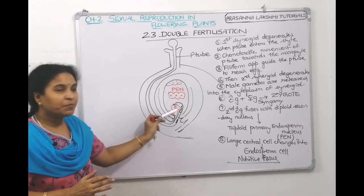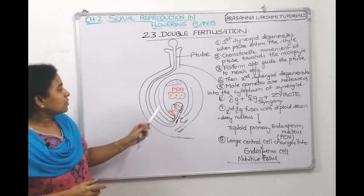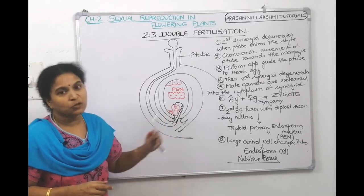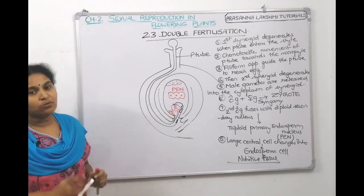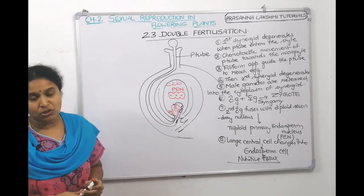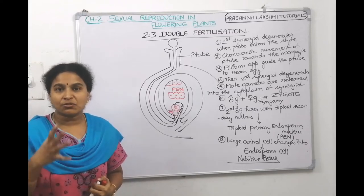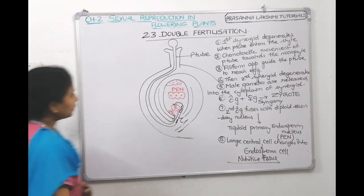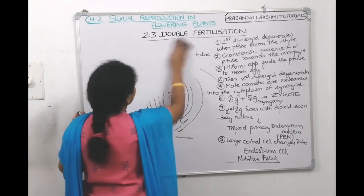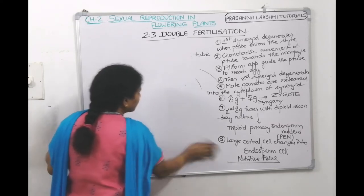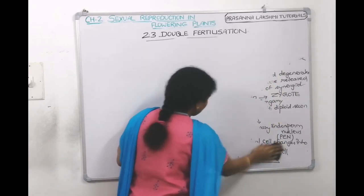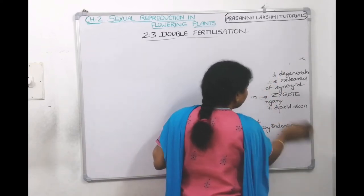After the PEN forms, the large central cell changes into an endosperm cell, which is a nutritive tissue. This endosperm cell will divide and develop into nutritive tissue. This is how double fertilization works — the zygote is formed at the micropylar end and the PEN is formed in the large central cell.